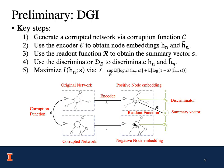Now let's move on to the preliminary. I will briefly overview the key steps of DGI since our work is closely related to DGI. Suppose we are given an original network. DGI will firstly generate a corrupted network via the corruption function C. Then it will use the encoder to obtain the positive node-embedding from the original network and the negative node-embedding from the corrupted network. Thirdly, it will use the readout function R to obtain the summary vector S for the original network. Fourthly, it will use the discriminator D_E to discriminate the positive node-embedding H from the negative node-embedding H-tilde. Finally, it will maximize the mutual information between the positive node-embedding H and the summary vector S via the binary cross-entropy loss for the discriminator.